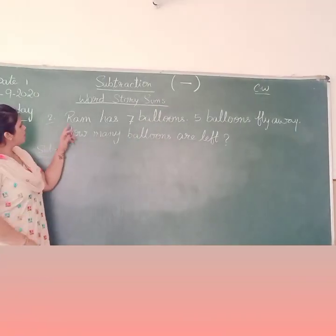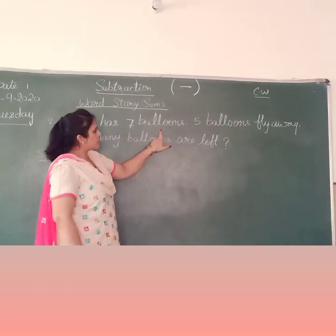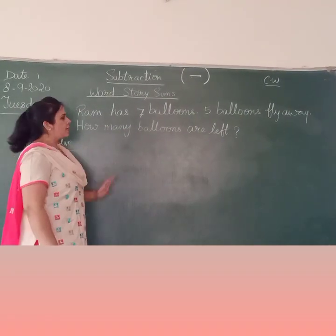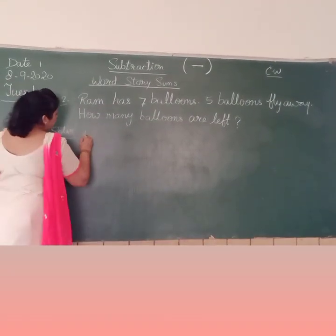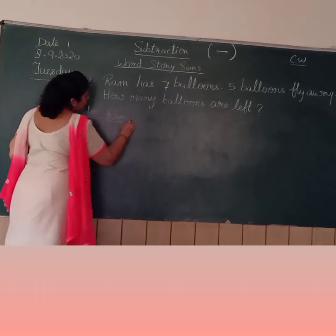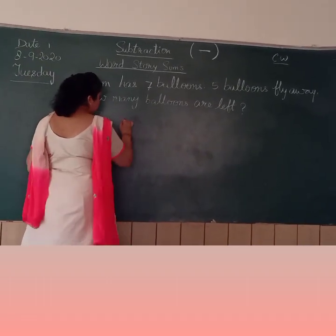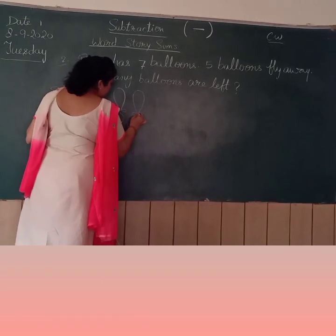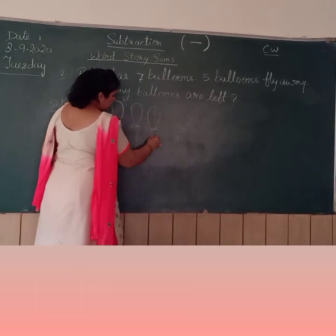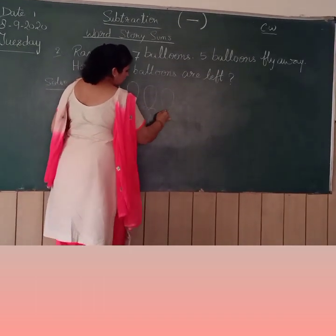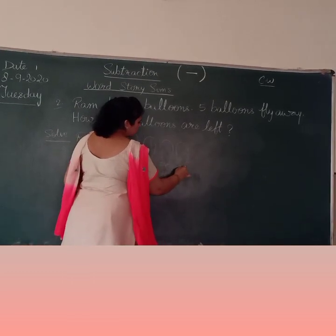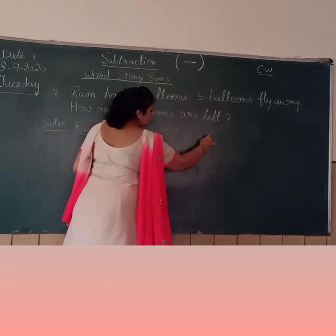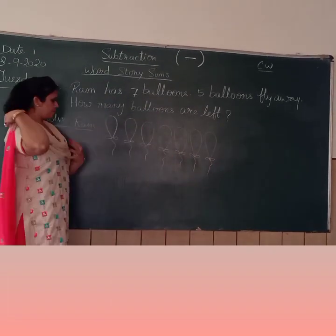Our next sum is: Ram has 7 balloons, 5 balloons fly away. How many balloons are left? First we will write the name of Ram. Ram has 7 balloons. Then we will draw 7 balloons: 2, 3, 4, 5, 6, and then 7.